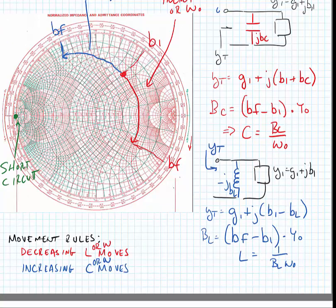For our movement rules, if we decrease the inductance, it moves up on a line of constant conductance. That's also true if we decrease the frequency. If we increase the capacitance or the frequency, it moves down on a line of constant conductance, both towards the short circuit.